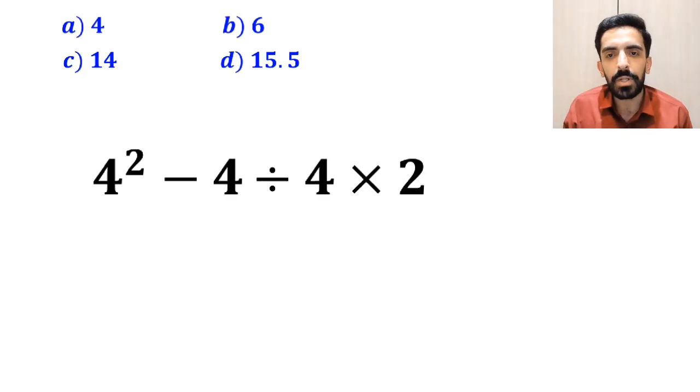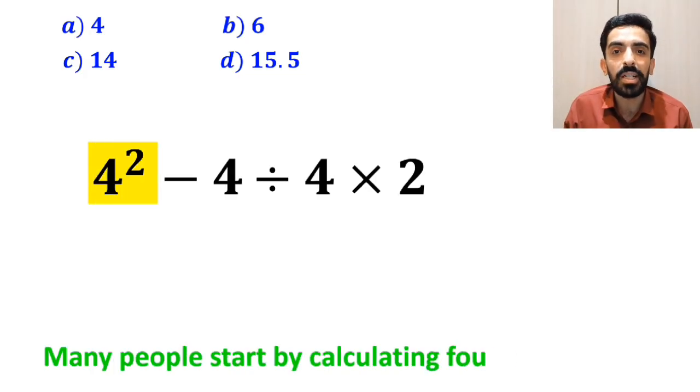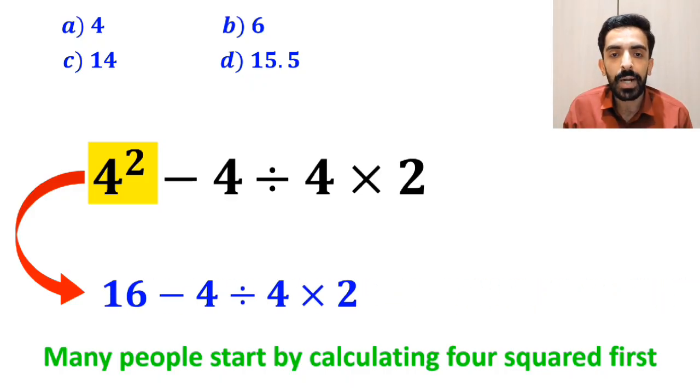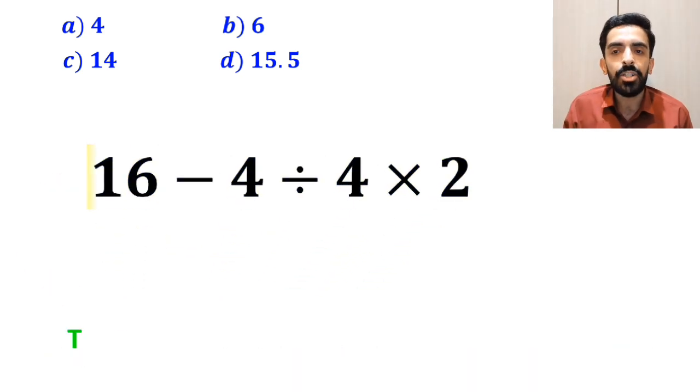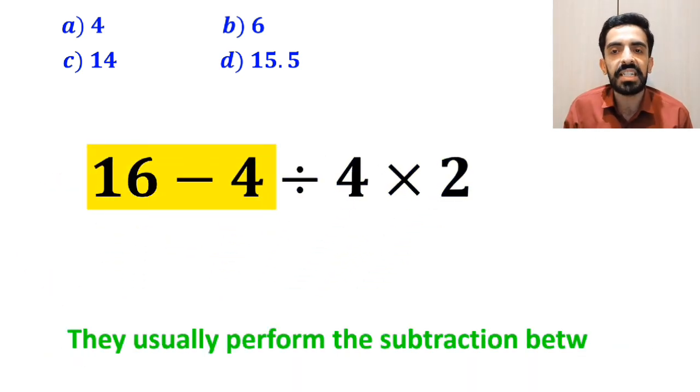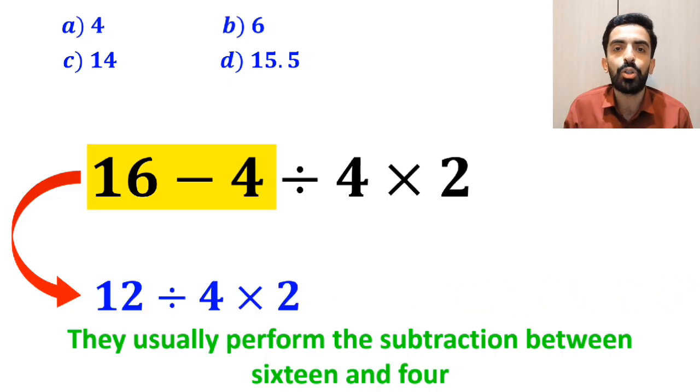To solve this problem, many people start by calculating 4 squared first, and instead of the original expression, they rewrite it as 16 minus 4 divided by 4 times 2. In the next step, they usually perform the subtraction between 16 and 4, and simplifying the expression to 12 divided by 4 times 2.